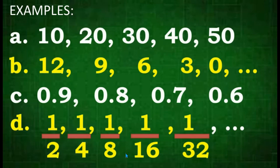Letter A: 10, 20, 30, 40, 50. Letter B: 12, 9, 6, 3, 0, and so on. Letter C: 9, 10, 8, 10, 7, 10, 6, 10. Letter D: 1/2, 1/4, 1/8, 1/16, 1/32, and so on.